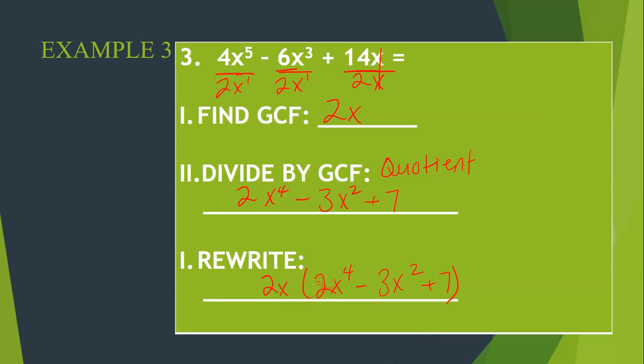So then your factored form is 2x times 2x to the 4th minus 3x squared plus 7. Questions, hesitations?